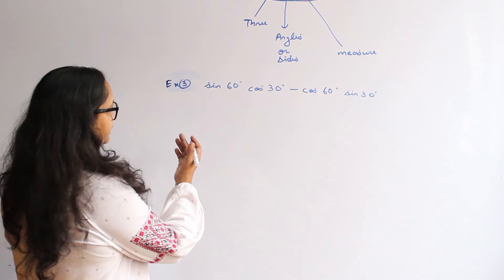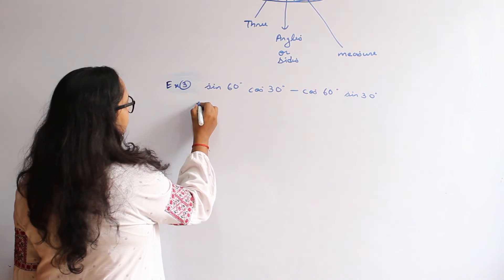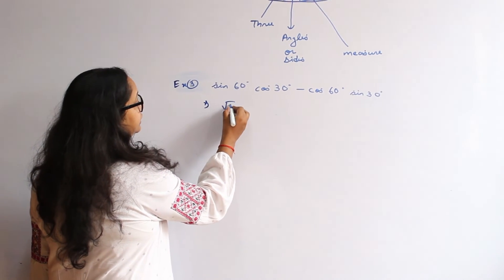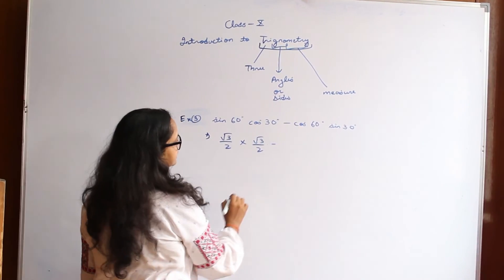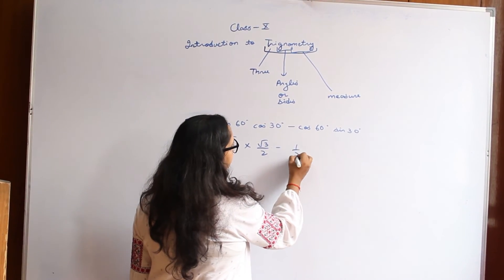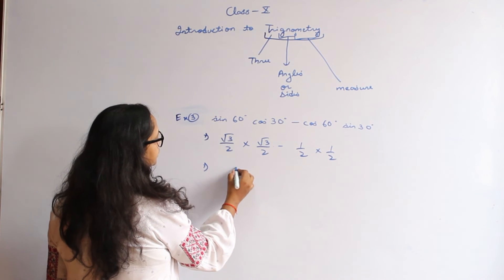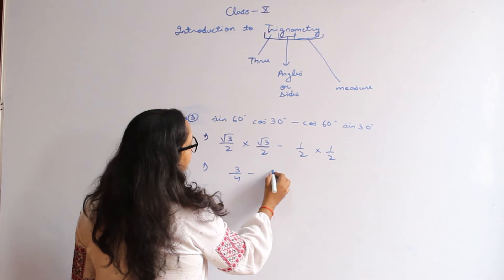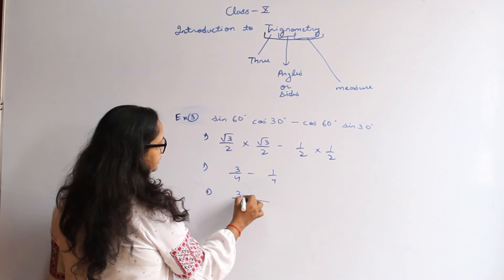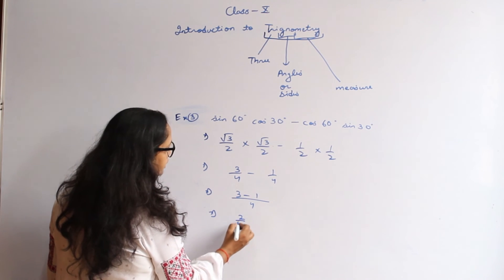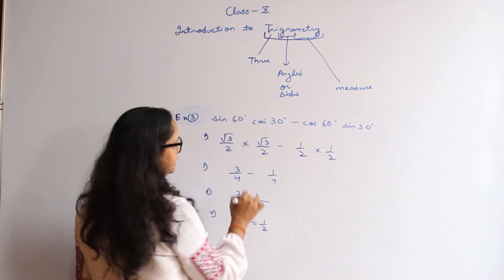Now we will solve a problem based on these angles. From the table: sin 60° = root 3 over 2, cos 30° = root 3 over 2, cos 60° = 1 over 2, sin 30° = 1 over 2. Solving: (root 3 × root 3) over (2 × 2) minus 1 over 4 equals 3 over 4 minus 1 over 4 equals 2 over 4, which simplifies to 1 over 2.